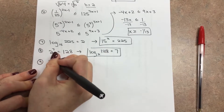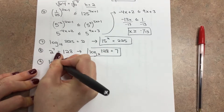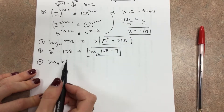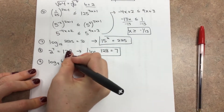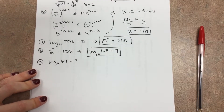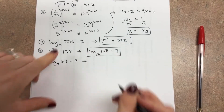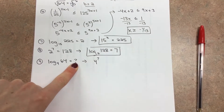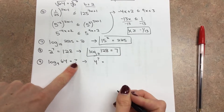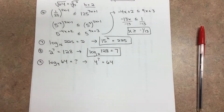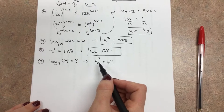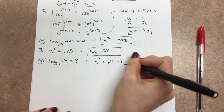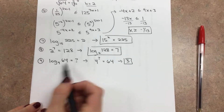Number 9: finding log base 4 of 64. We don't know what it's equal to, so we convert to exponential form: 4 to the question mark equals 64. We're finding the missing exponent that takes 4 to 64. The answer is 3, since 4 to the 3rd power gives 64.